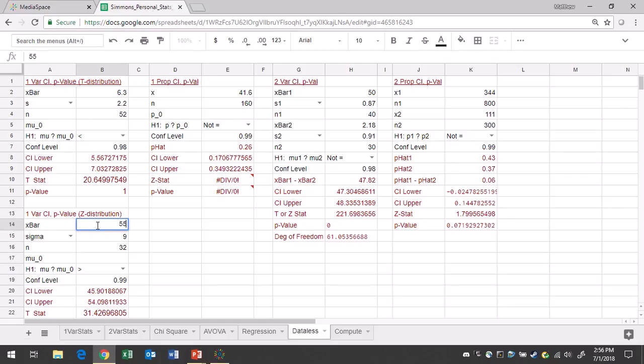X-bar is 55, sigma is 8, sample size is 26, and confidence level is 0.9 or 0.90.